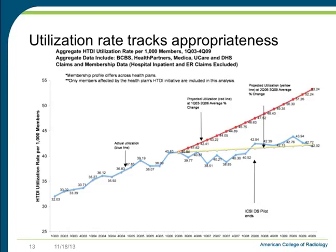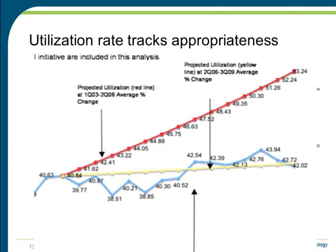There is a proven link between the utilization of high-tech diagnostic imaging exams and the introduction of the appropriateness criteria. The Institute for Clinical Systems Improvement (ICSI), an independent nonprofit healthcare improvement organization in Minnesota, did a pilot study using five healthcare providers who tested clinical decision support based on the appropriateness criteria for ordering high-tech diagnostic exams. This chart shows utilization of high-tech diagnostic imaging exams prior to and after the implementation of decision support. Post-implementation, utilization flattened versus what was projected based on the historical average. All five provider sites continue to use clinical decision support.